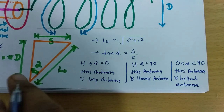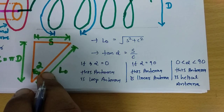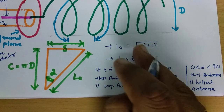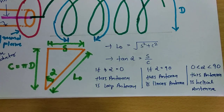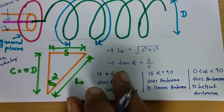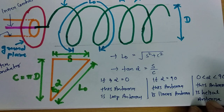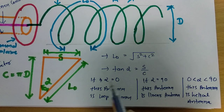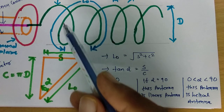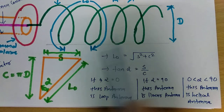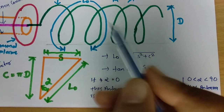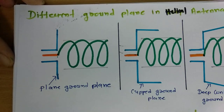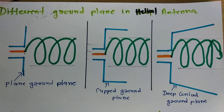So that is the importance of alpha. L0 can be calculated as the square root of S squared plus C squared, and tan alpha equals spacing divided by circumference. Based on the value of alpha: if alpha is 0, this becomes a loop antenna; if alpha is 90, this becomes a monopole or linear antenna; and if it is in between 0 and 90, this antenna will be a helical antenna. Now let us move on to the next point: different types of ground plane in helical antenna.